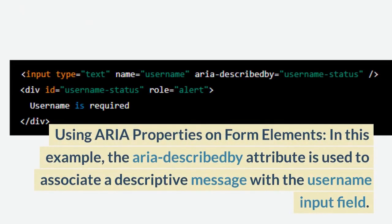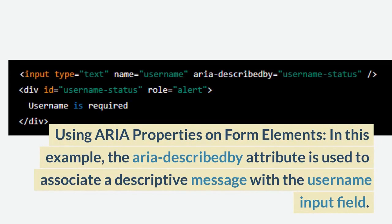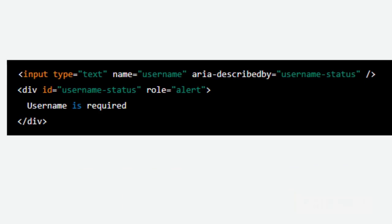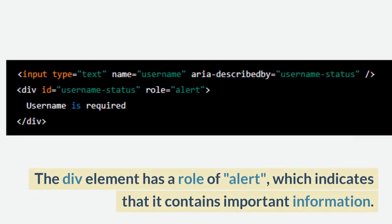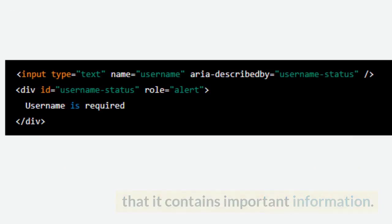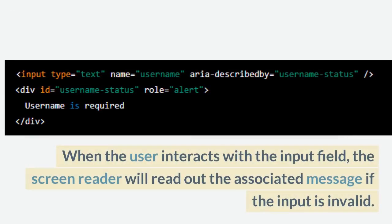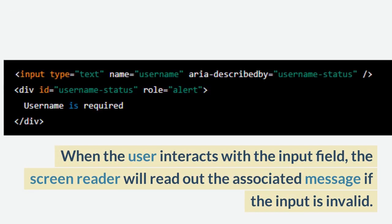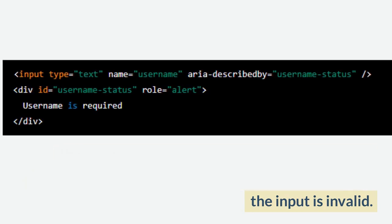Using aria properties on form elements: in this example, the aria-describedby attribute is used to associate a descriptive message with the username input field. The div element has a role of alert, which indicates that it contains important information. When the user interacts with the input field, the screen reader will read out the associated message if the input is invalid.